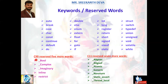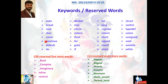According to C99, five more reserved words were added: _Bool, _Complex, _Imaginary, inline, and restrict. C11 adds seven more words like _Alignas, _Alignof, _Atomic, _Generic, _Noreturn, _Static_assert, and _Thread_local. The latest versions are released with keywords starting with an underscore followed by a capital letter. But according to C89, these 32 keywords must be represented as lowercase only.